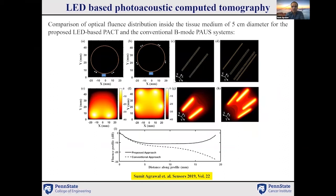Comparing fluence with two versus four LED arrays around the imaging geometry: with four LED arrays we have more uniform fluence throughout the deep tissue region. The two-array fluence reduces beyond 15 mm and is not sufficient for imaging beyond 20 mm, whereas with four LED arrays we maintain uniform fluence even at deep tissue depths.